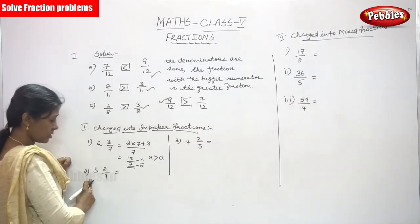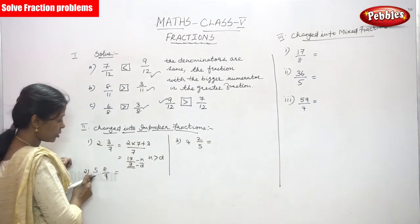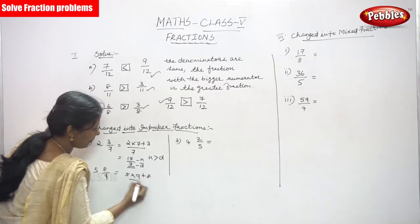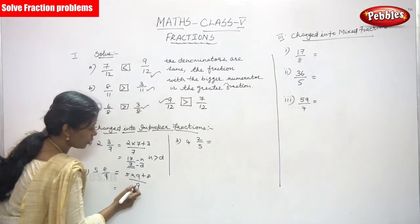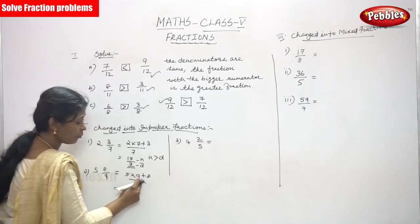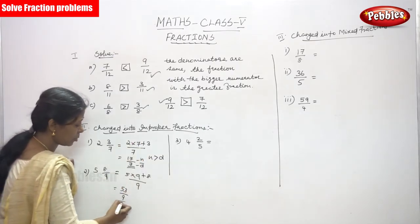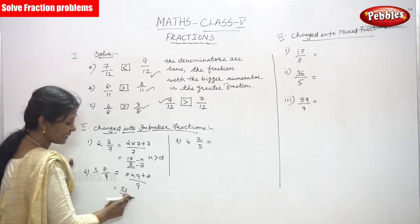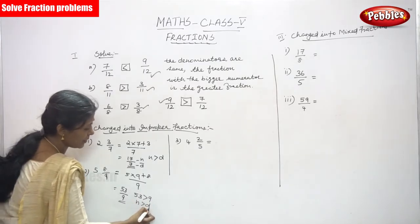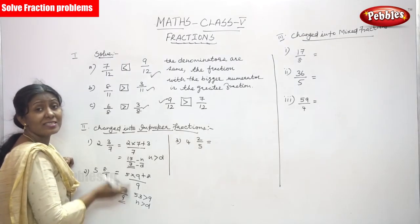Next one is 5 and 8 by 9. Here 5 is the whole number and 8 by 9 is the proper fraction, so it is a mixed fraction. To convert: 5 into 9 plus 8, divided by 9. That gives 45 plus 8 equals 53, so the answer is 53 by 9. It is an improper fraction because 53 is greater than 9, meaning it is always greater than 1.